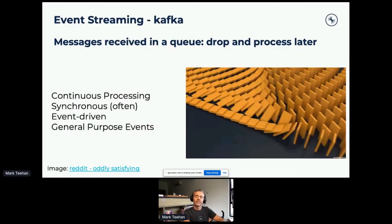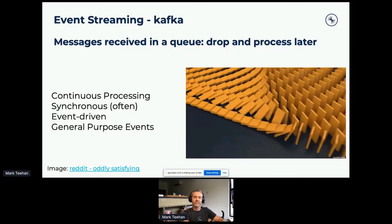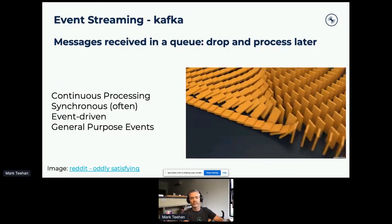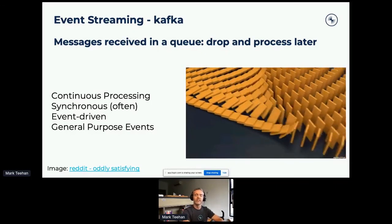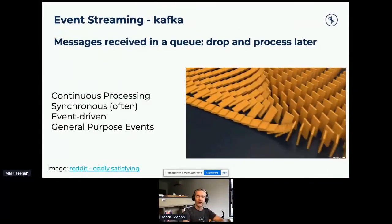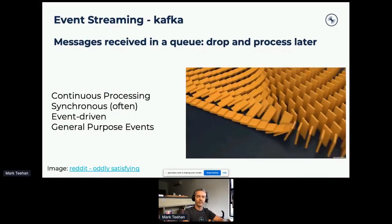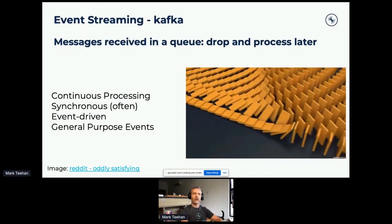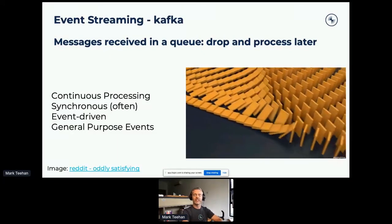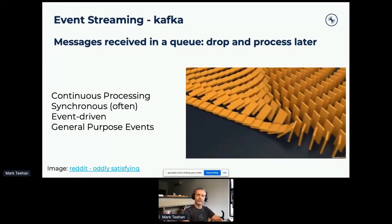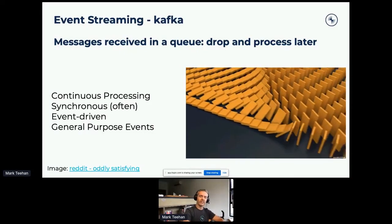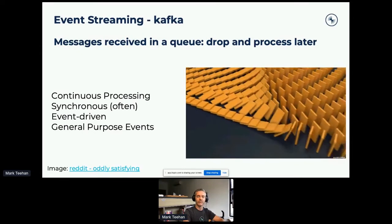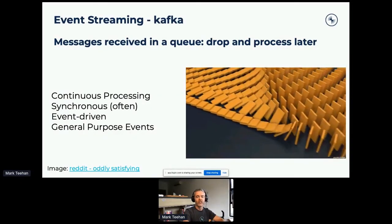With event streaming, we look at continuous processing. An event triggers related events within the Kafka system — for example, adding a new customer may trigger events for requesting a bio photograph, setting up a bank account, or sending an OTP notification. Events trigger other events, and this is very much the Kafka way.